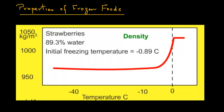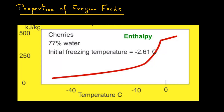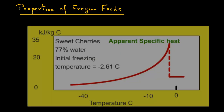The enthalpy of sweet cherries decreases once the temperature goes below 0 degrees C. The apparent specific heat of sweet cherries shows a large increase just around the freezing point, and then it decreases in the sub-freezing temperature zone.